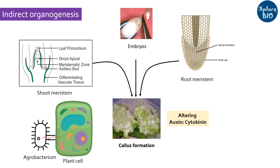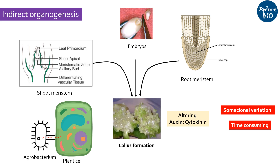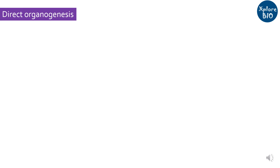But the major problem with indirect organogenesis is that during subculturing, the callus may acquire somaclonal variation, in which the plants regenerated are not genetically similar to the source material or the explant. Secondly, the process of regenerating plants takes several months. To overcome these challenges with indirect organogenesis, we use direct organogenesis.